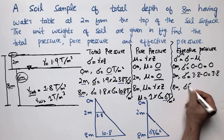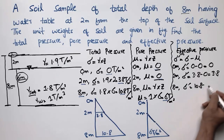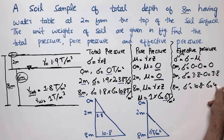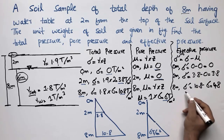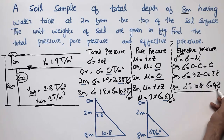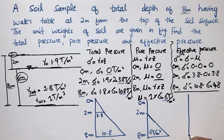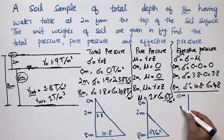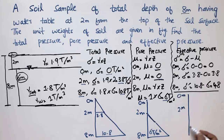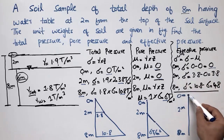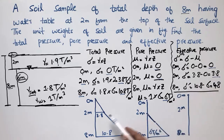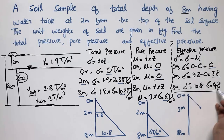At 8 meters depth, effective pressure equals 10.8 minus 6, giving 4.8 ton per square meter. Drawing the effective pressure profile: at 0 meters it is 0, at 2 meters it is 3.8 ton per square meter (same as total pressure since pore pressure is zero there), and at 8 meters it is 4.8 ton per square meter.